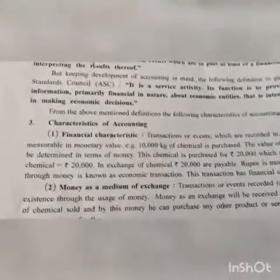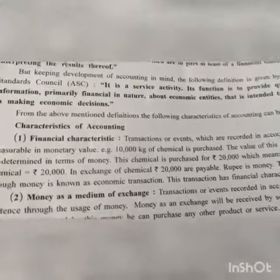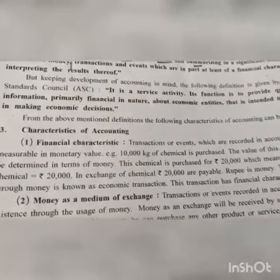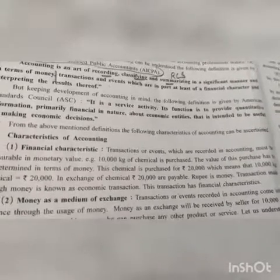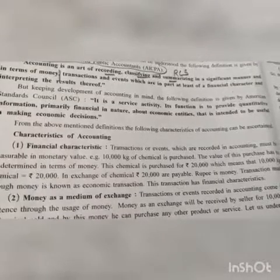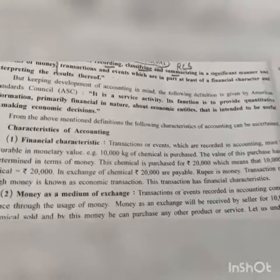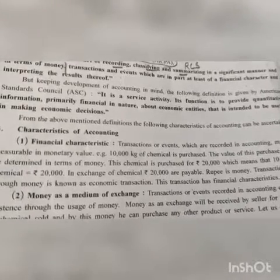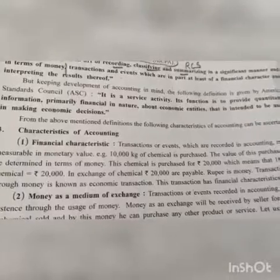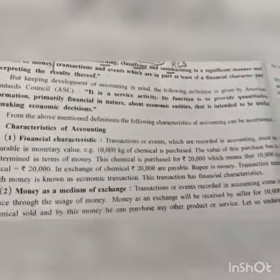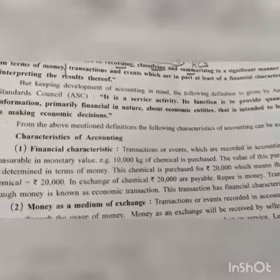Now let us see the characteristics of accounting. First is financial characteristic — transactions or events recorded in accounting must be measurable in monetary value. For example, 10,000 kg of chemical is purchased for rupees 20,000. The value of this purchase is determined in terms of money. Transaction made through money is known as an economic transaction — thus this transaction has financial characteristics. Each and every transaction in business should be financial in nature, then only it can be recorded in accountancy.